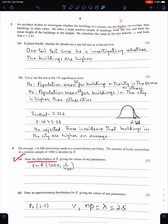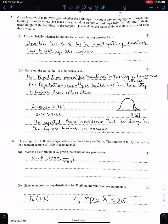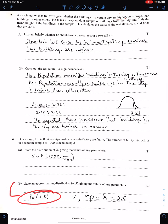Part A: State the distribution of X, giving the values of any parameters. Distribution is binomial with parameters N1000 and P1 upon 400. Part B: State an approximating distribution for X, giving the values of any parameters. Since N is greater than 50 and P is less than 0.1, therefore, the approximating distribution for X is Poisson with lambda 2.5, which is the mean of binomial distribution. This is the answer of this part.